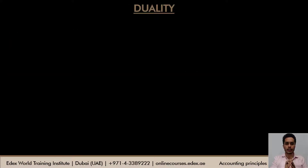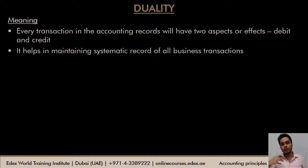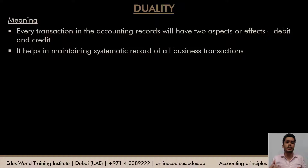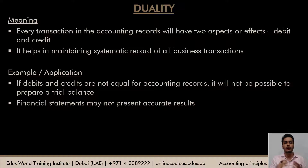The duality principle states that every transaction in the accounting records will have two effects — a debit and a credit — in such a way that debits are always equal to credits. It is because of this principle that we are able to prepare our trial balance and financial statements. Without duality, our accounting records would not be systematically maintained. For any transaction, debits always equal credits.